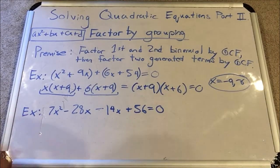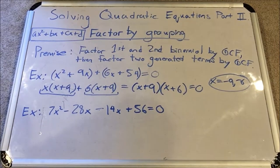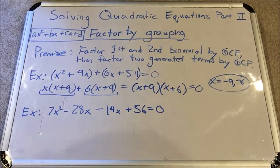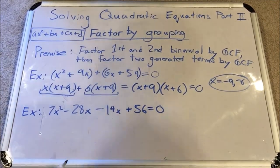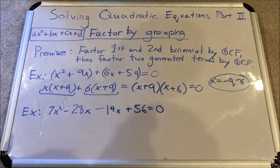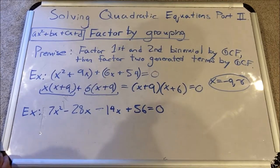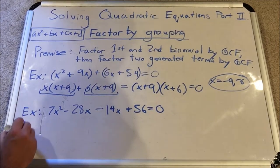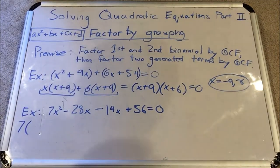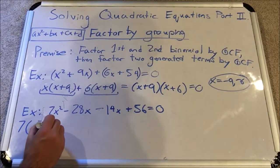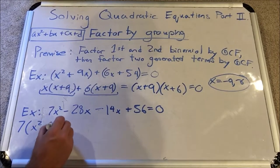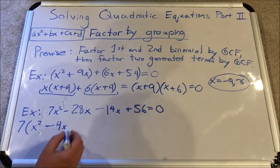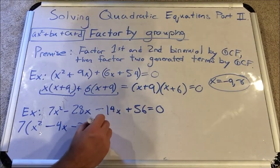For a more complex one, this example has an 'a' that's not equal to one. When doing any type of factoring, the first step can be to factor out the GCF of the entire polynomial to simplify things. So I look at all four terms — the largest factor they all share is 7, because each number is a multiple of 7. Factoring out 7 first gives me 7 times (x² − 4x − 2x + 8) — that is, 28÷7 = 4, 14÷7 = 2, 56÷7 = 8.